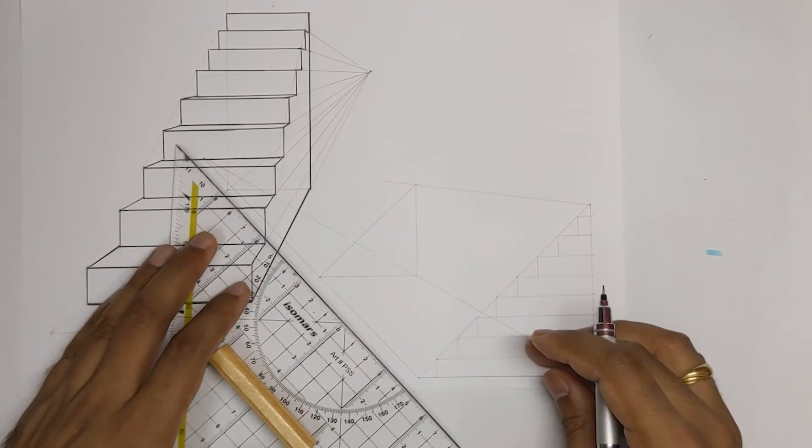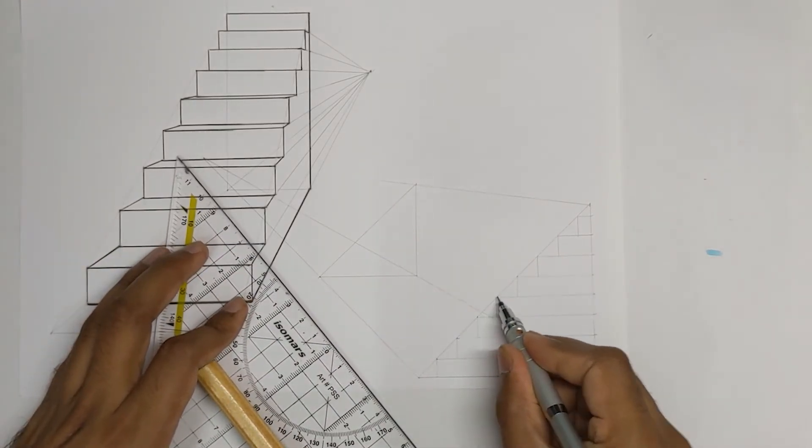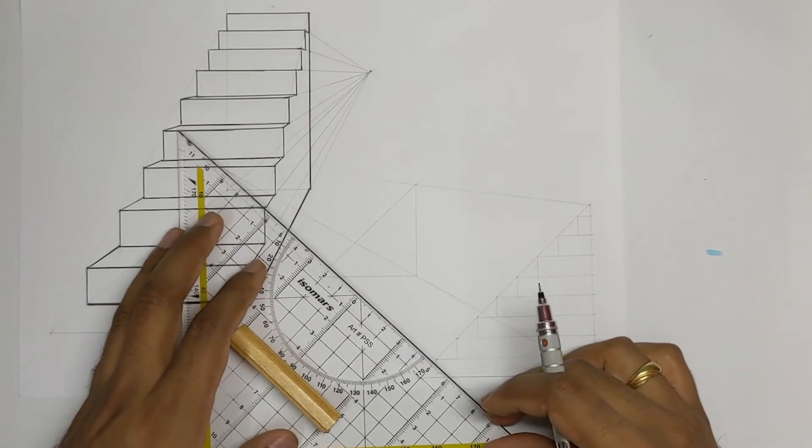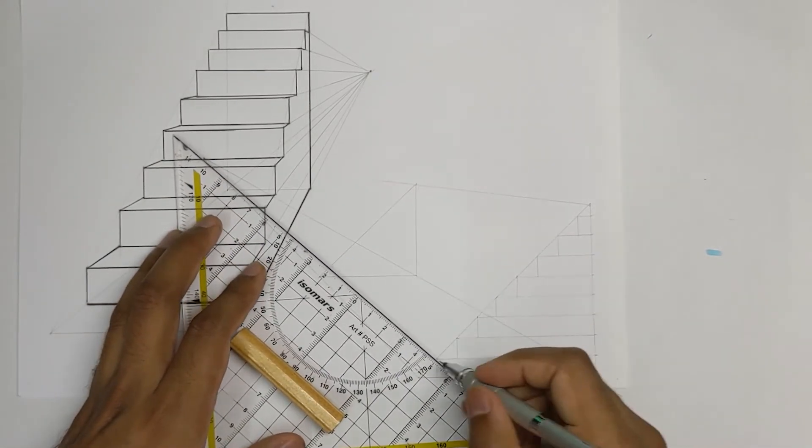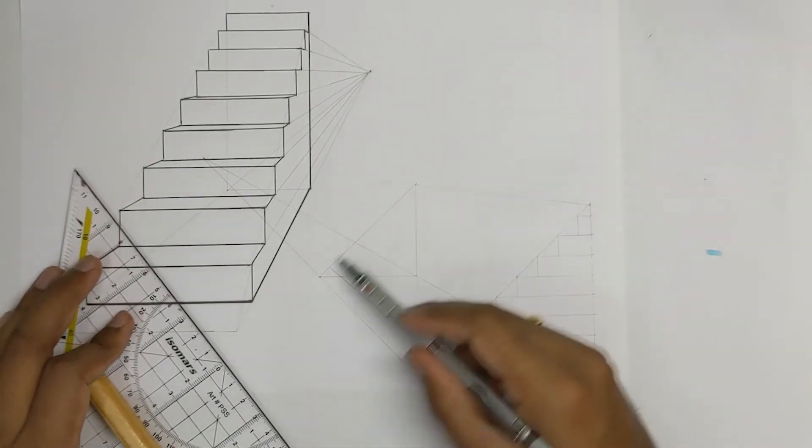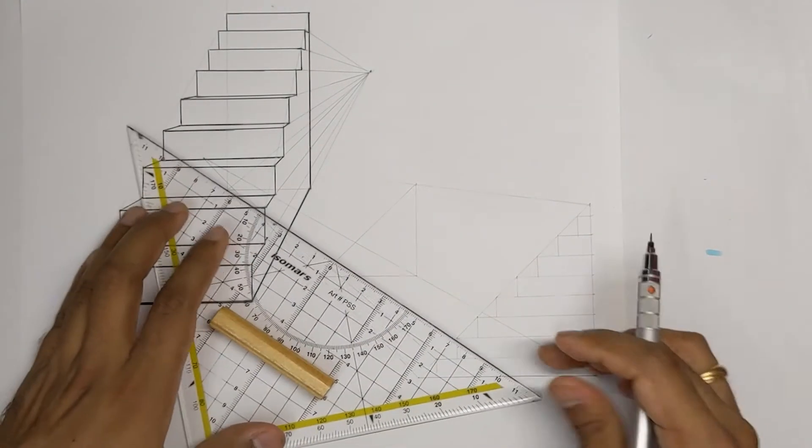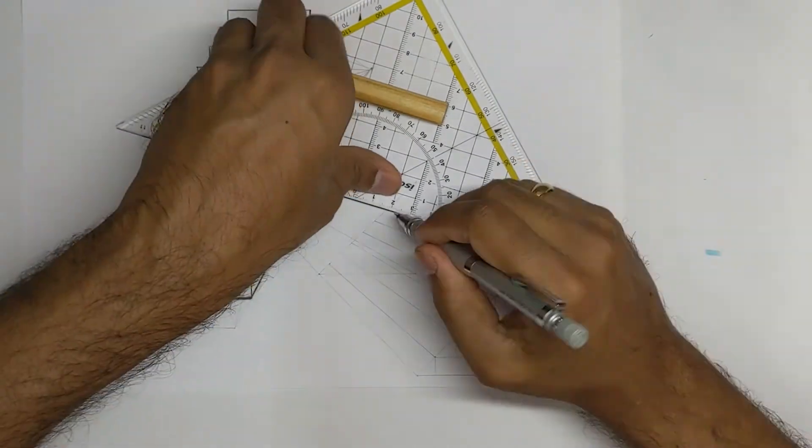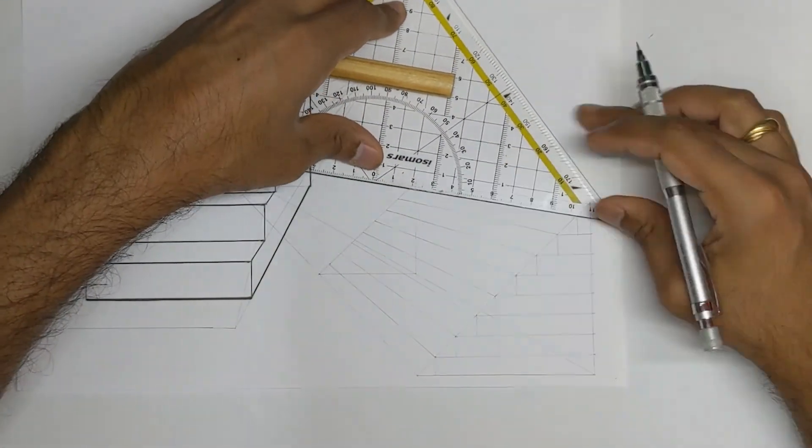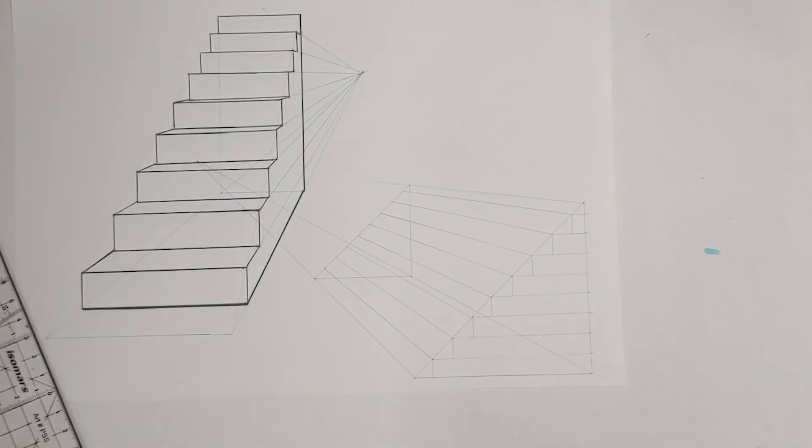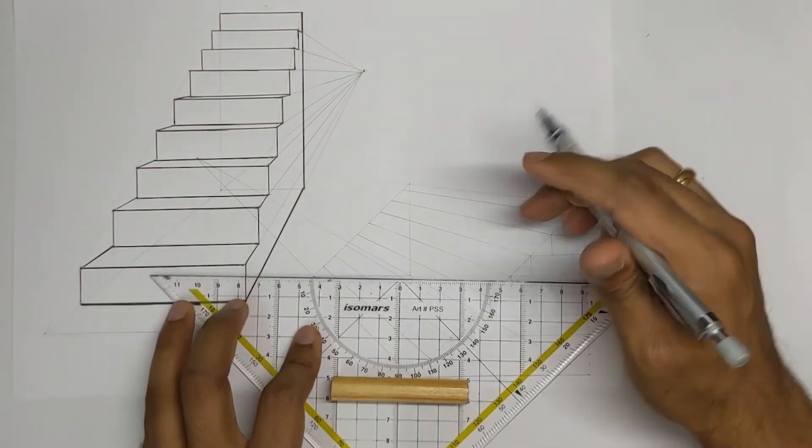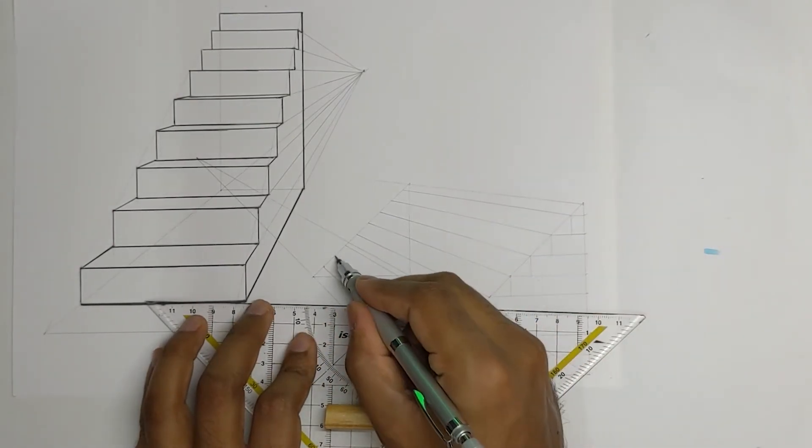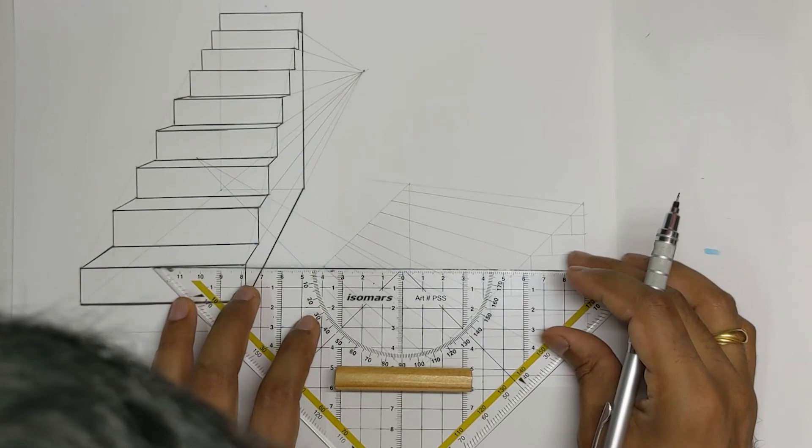Okay great so now from the top intersection points run lines to the vanishing point until it meets with the wedge line on the other side over here. So next what we need to do is just take these points over here and draw perfect horizontal lines.